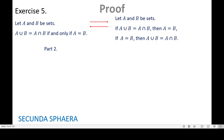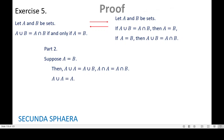For part two, suppose A is equal to B. By the substitution property of equality, A union A equals A union B — replacing the second A with B — and A intersection A equals A intersection B. Using exercise one, A union A equals A and A intersection A equals A. By substitution, we land on A union B equals A intersection B. That is it for exercise number five, part two, and the entirety of exercise number five.